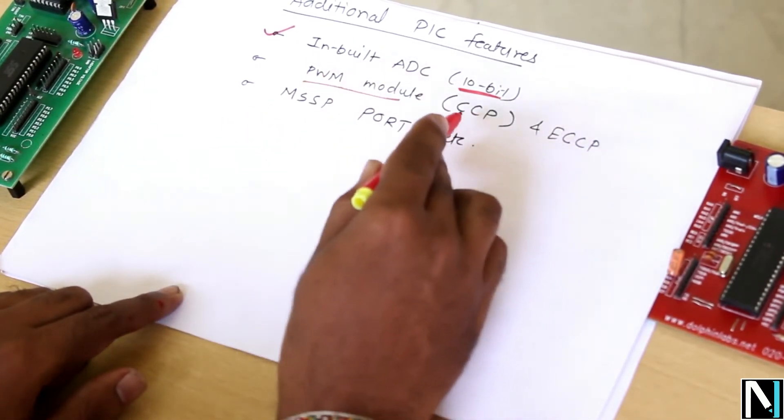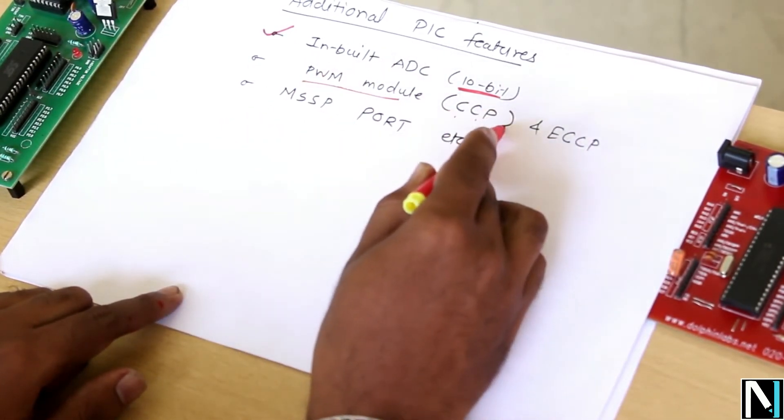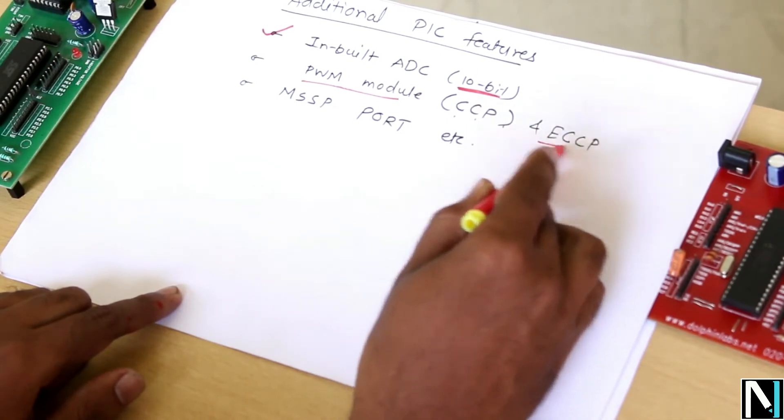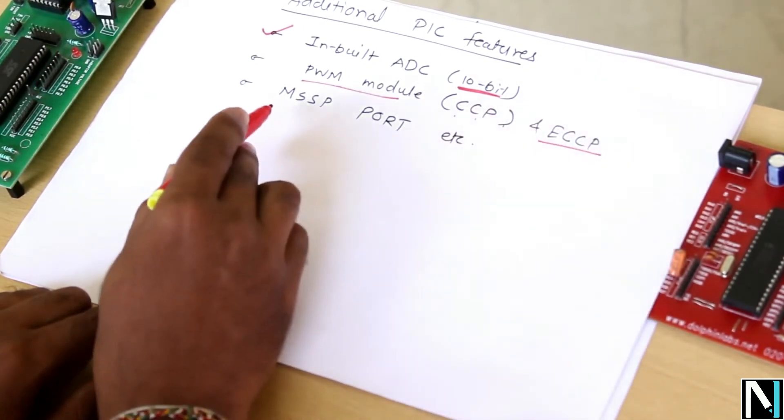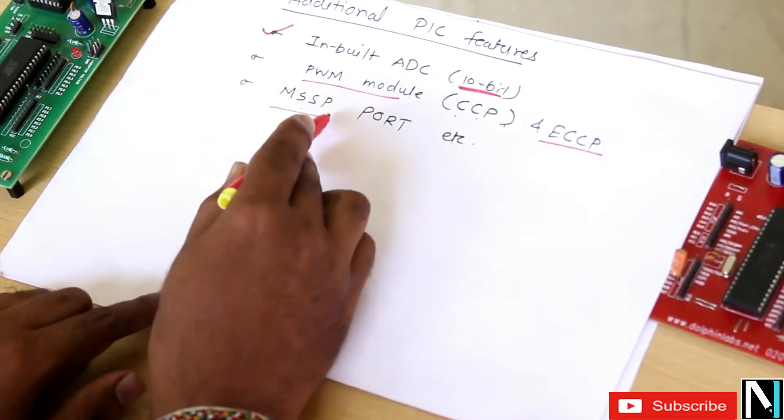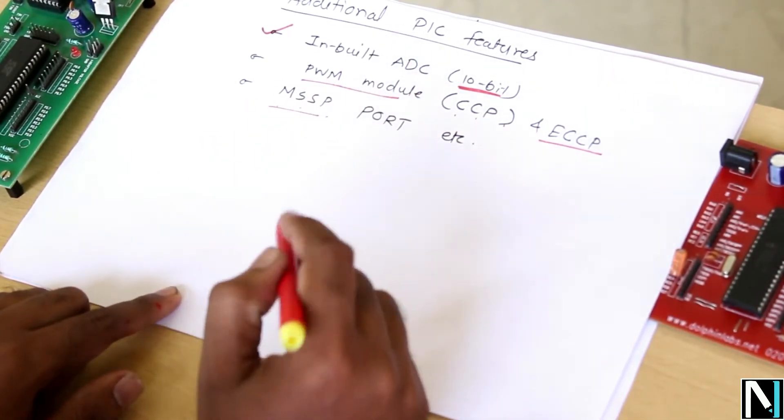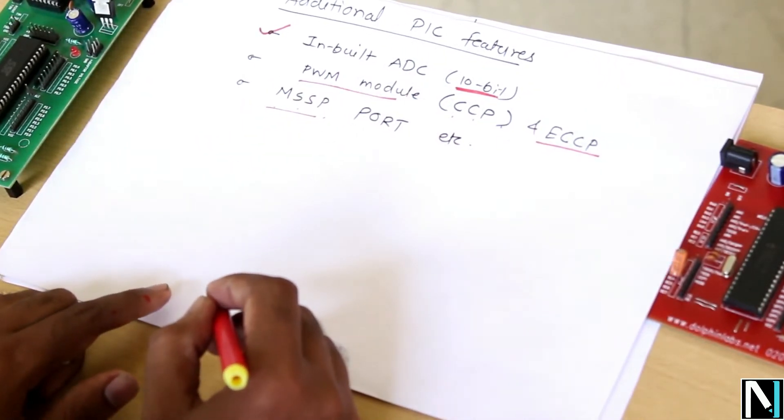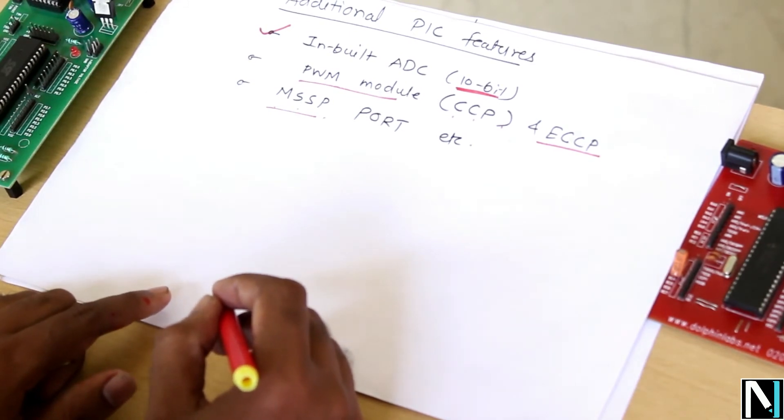It has the PWM module called as Capture Compare PWM module and Enhanced Capture Compare PWM module. As it has synchronous port, this is also called as Master Synchronous Serial Port. And it has SPI and I2C interface under it.